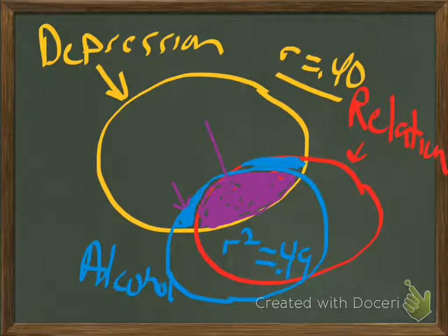Multiple regression asks: how much of the variance in the dependent variable is explained by the two independent variables combined? The two independent variables combined explain a pretty healthy chunk of the variance in depression — probably around 18% or 19% — but the unique variance explained by each one individually is very small.